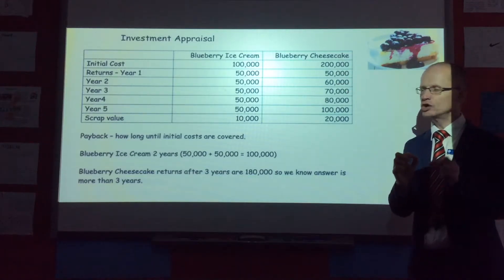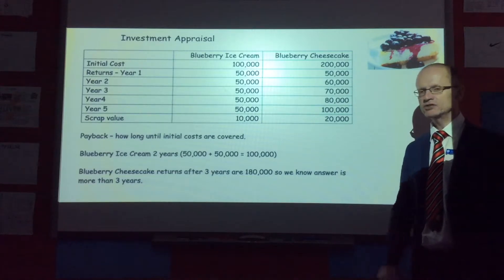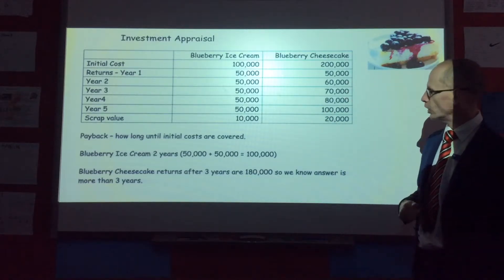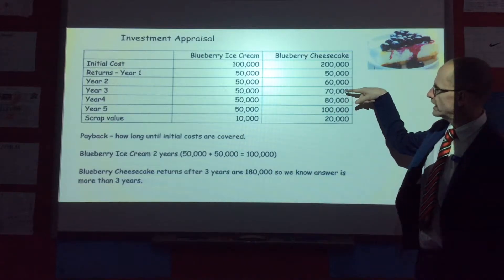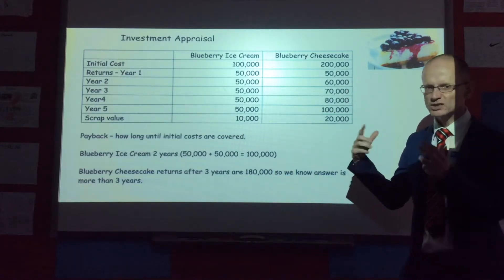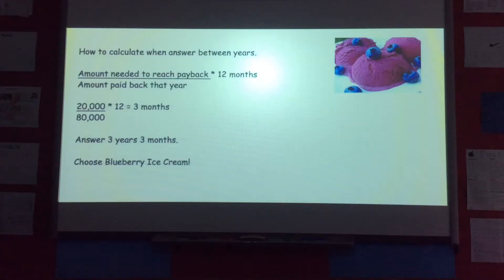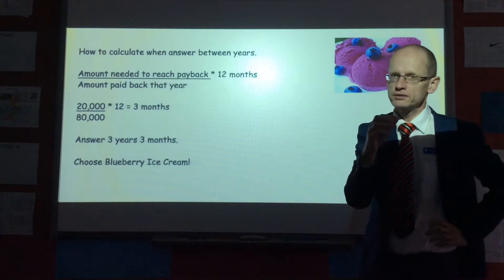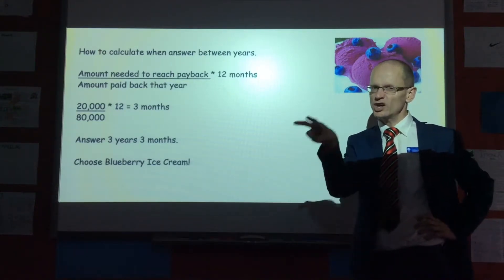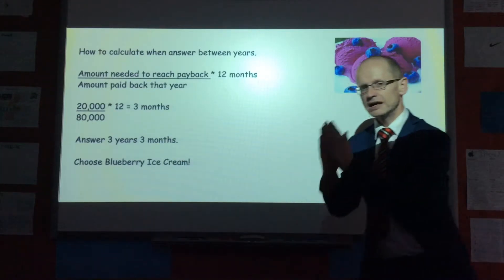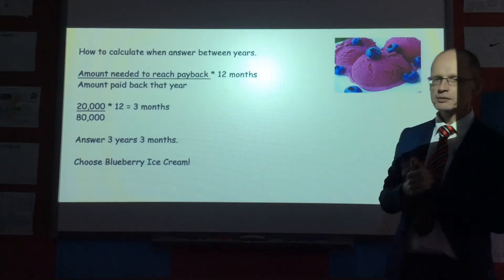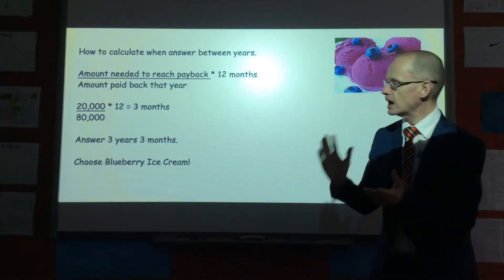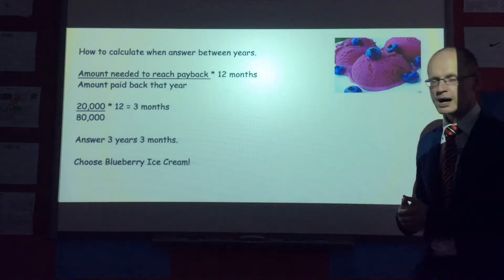For blueberry cheesecake, adding $50,000 and $60,000 gives $110,000; adding years one through three gives $180,000; and adding years one through four gives $260,000. So we know the payback is between three and four years. To calculate the fraction, we take the amount still needed after three years: $200,000 initial cost minus $180,000 = $20,000 remaining. Dividing $20,000 by the year-four return of $80,000, then multiplying by 12 gives three months. So payback is three years, three months — meaning we would choose blueberry ice cream.